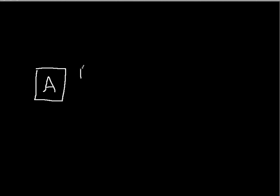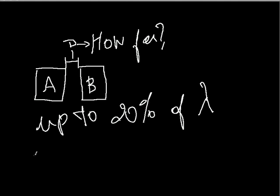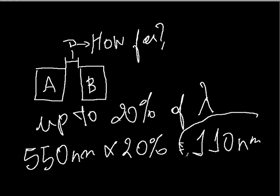There is another prerequisite for presenting birefringence, related to the distance between two molecules. Let's say we have molecule A and molecule B separated by a given distance D. At least in one dimension, they can be as far as 20% of the wavelength of light used. When using an optical microscope with white light, the mean wavelength is 530 nm. This multiplied by 20% gives 110 nm — this is our limit.